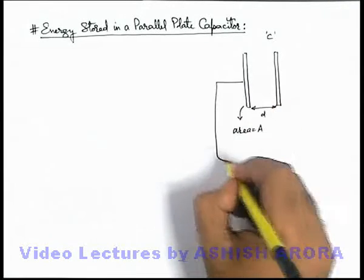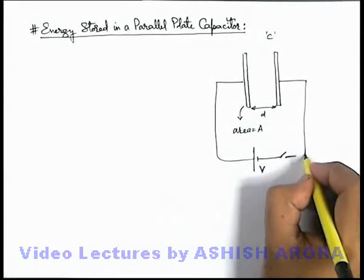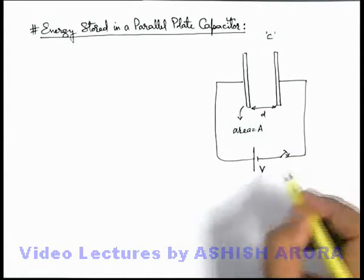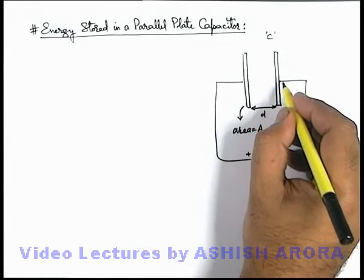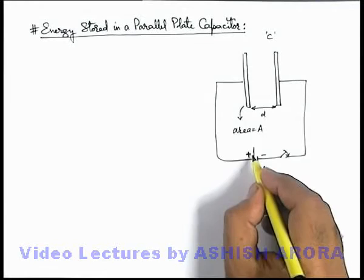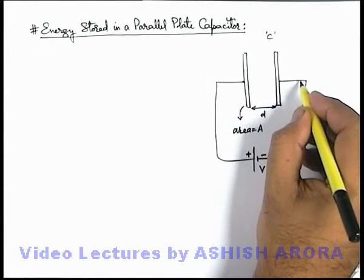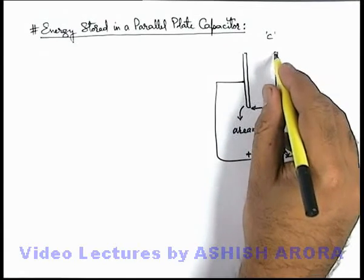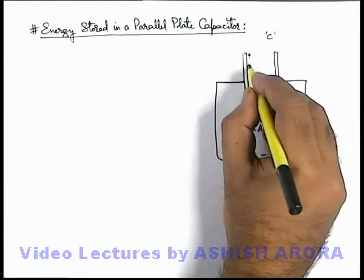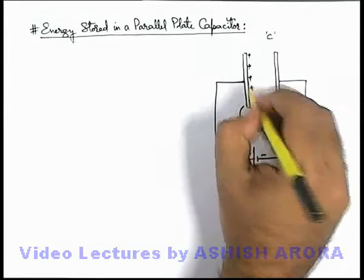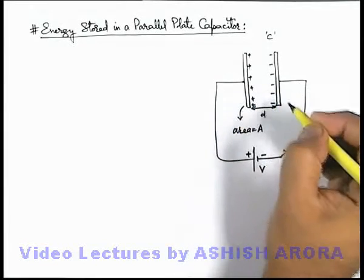If the capacitor is connected across a battery of constant potential difference V, we studied that on closing the circuit to maintain the same potential difference across the capacitor, the positive terminal of battery will pull free electrons of the left plate and displace these free electrons to the right plate of the capacitor, due to which the left side plate will get positively charged and right side plate will get negatively charged.